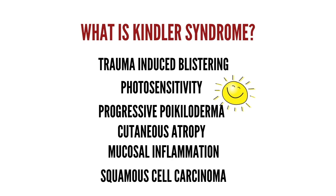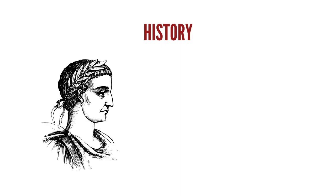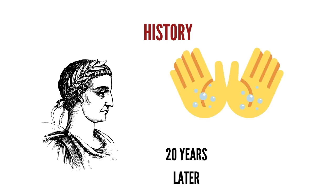Kindler syndrome is one of the genodermatoses and is inherited in an autosomal recessive pattern. Regarding the history, Theresa Kindler described a patient with acral blistering and photosensitivity during infancy, followed later in life by progressive poikiloderma and atrophy. Twenty years later, Weary reported 10 members of a single family with similar findings.